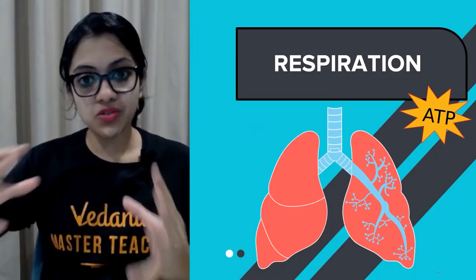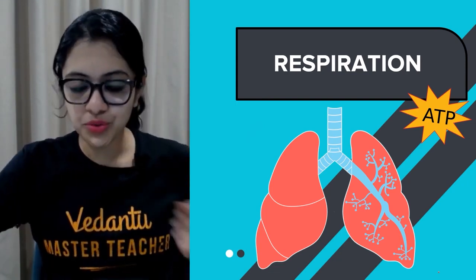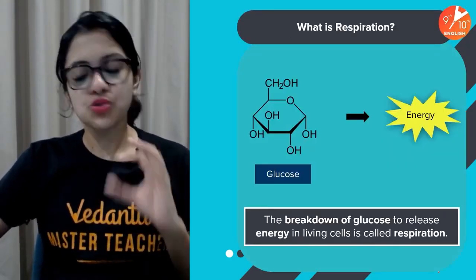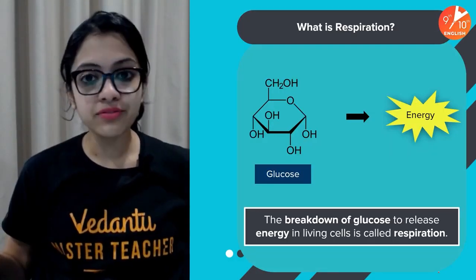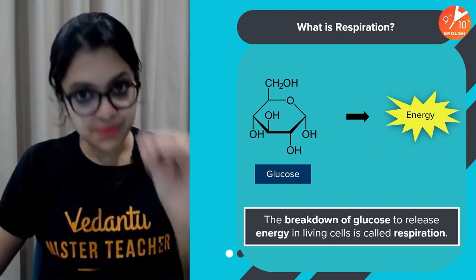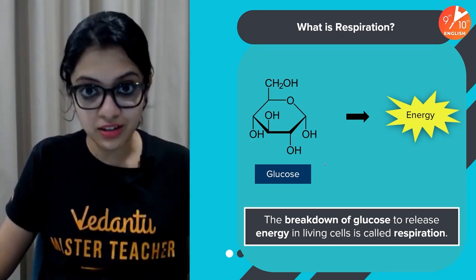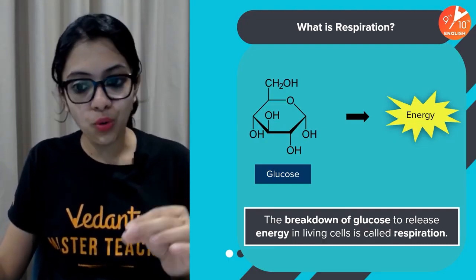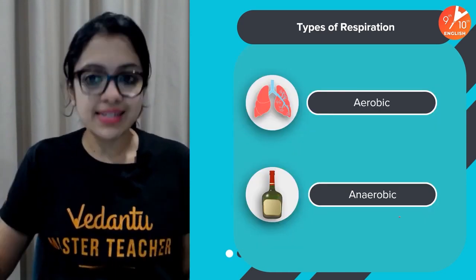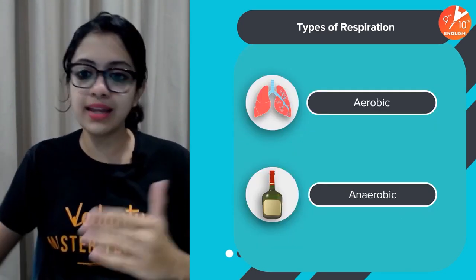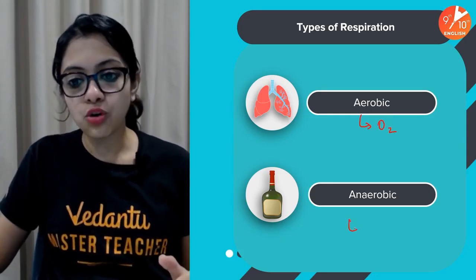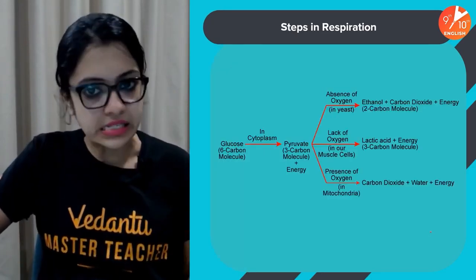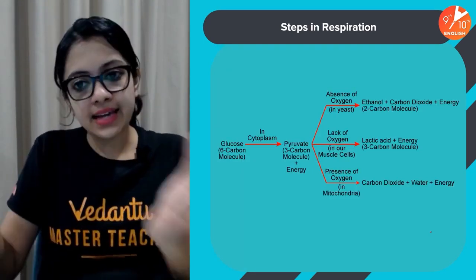Now moving on to respiration, which is a continuation — because end products of digestion include glucose, amino acids, fatty acids, and glycerol. Respiration is the process by which energy can be derived from nutrients. Glucose being the best immediate source of energy, respiration is the breakdown of glucose to release energy in living cells. There are two major kinds: aerobic, wherein oxygen is involved, and anaerobic, which occurs in the absence of oxygen — for example in yeasts.